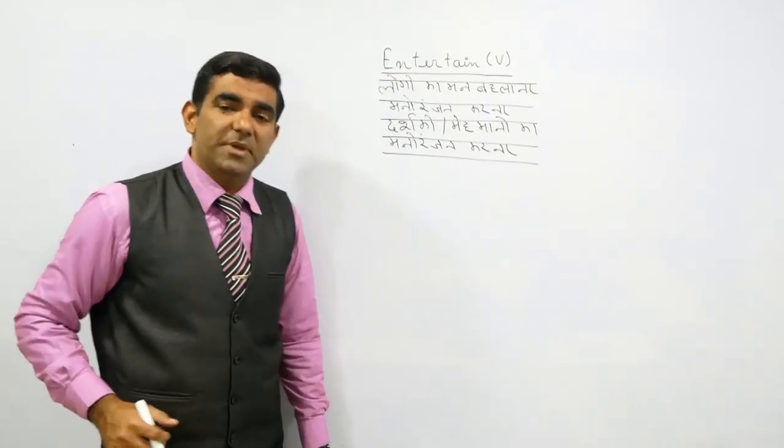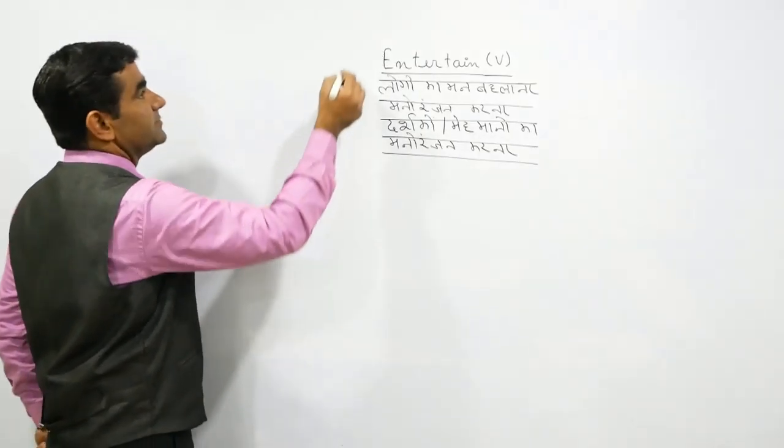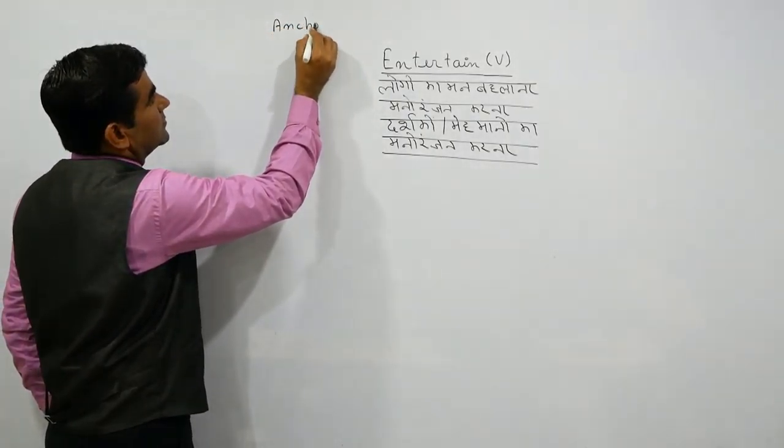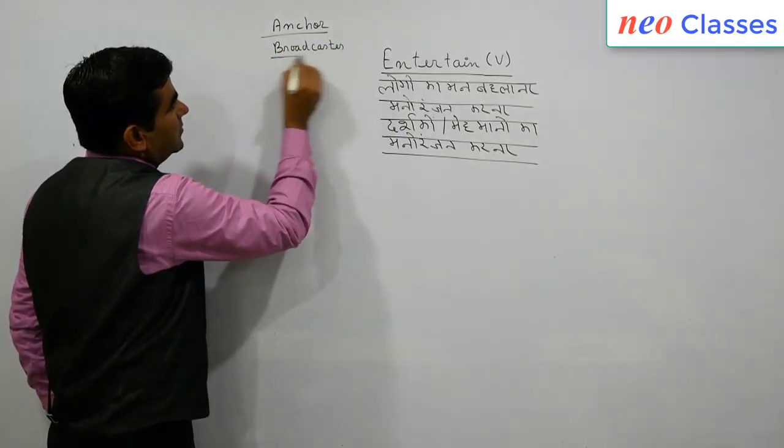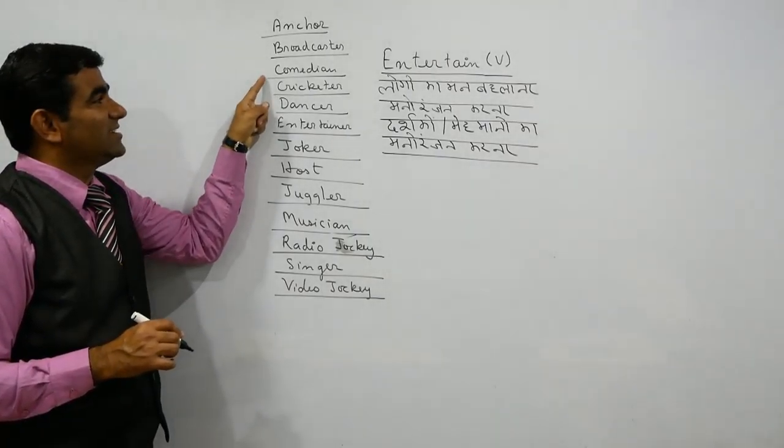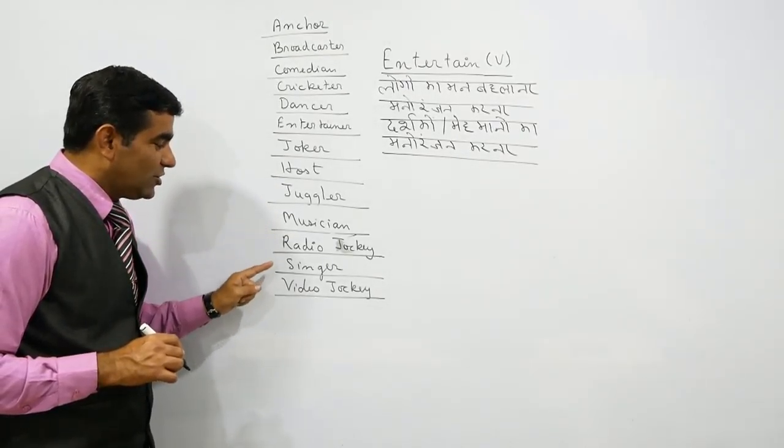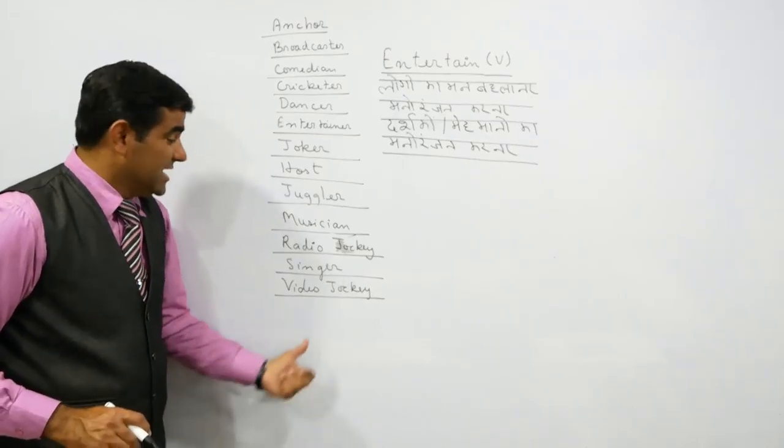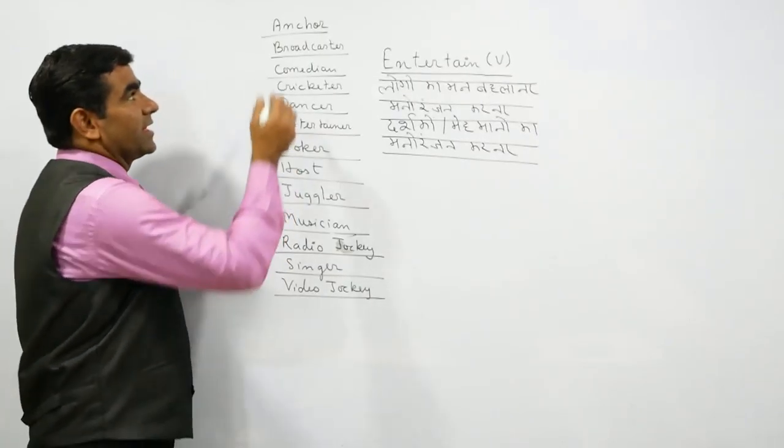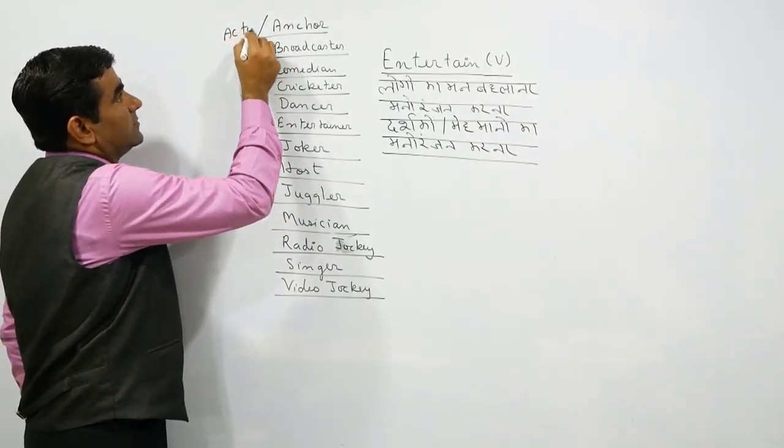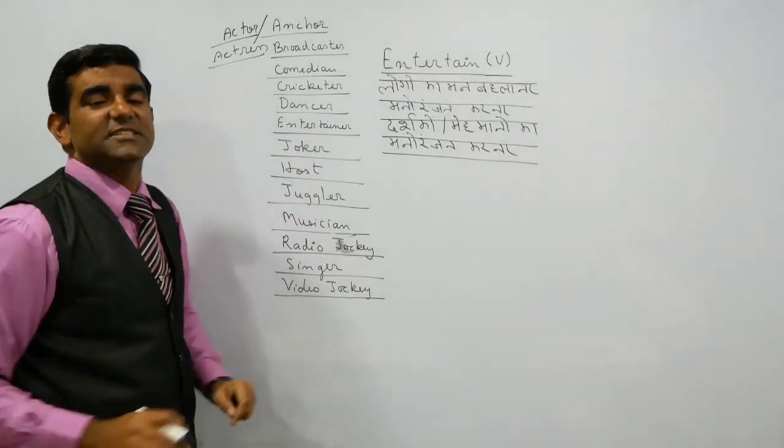In day to day life, how many entertainers are there? Anchor, Broadcaster, Comedian, Cricketer, Dancer, Entertainer, Joker, Host, Juggler, Musician, Radio Jockey, Singer, Video Jockey. These are those persons that entertain us in day to day life, and actors and actresses also.